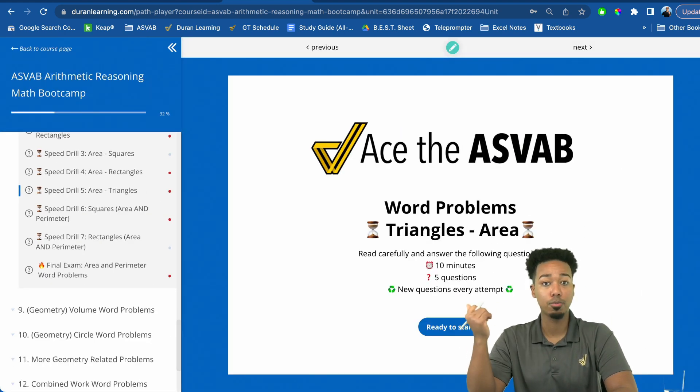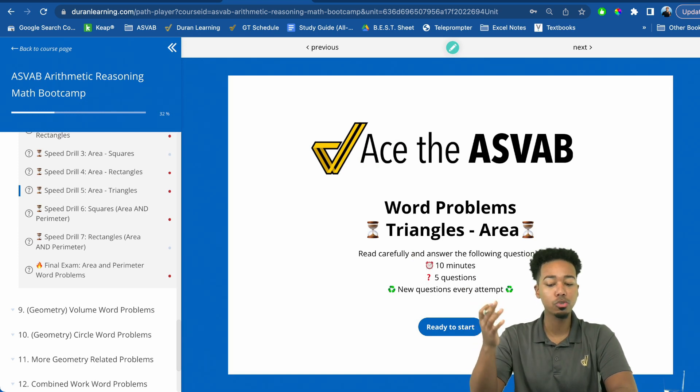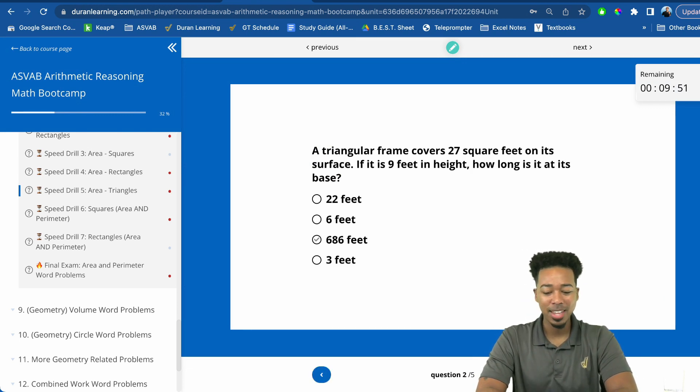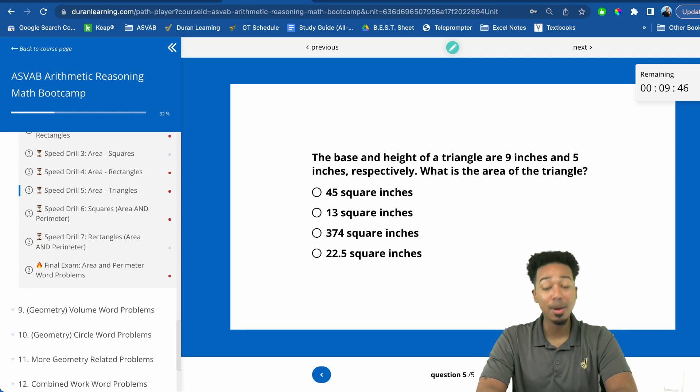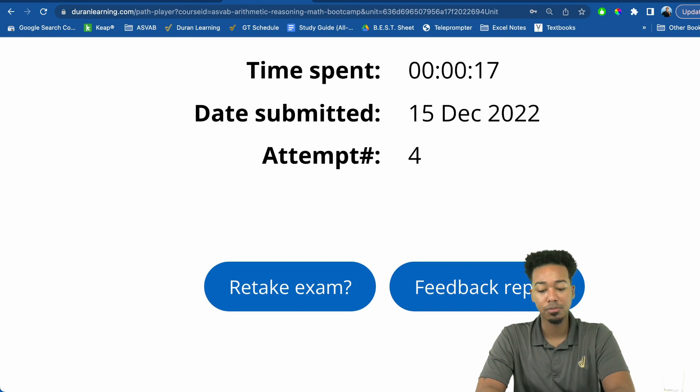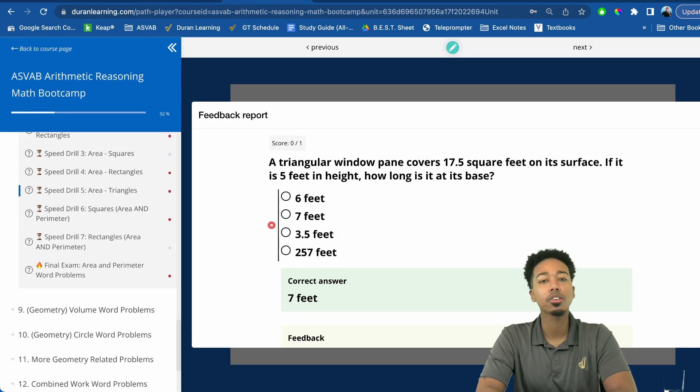But I want to point out the triangle word problems here because this speed drill is so awesome. You're going to get two minutes per question and you'll be able to test yourself with brand new questions every single time you reset this. So just like the problem we're doing right now, you'll be able to practice just like that and you'll see that once you're done trying these problems, you're going to have step-by-step solutions to every single problem. Oh no, I failed. But remember it's not about passing or failing. It's about learning from your mistakes. So that's why you're going to click right here where it says feedback report.